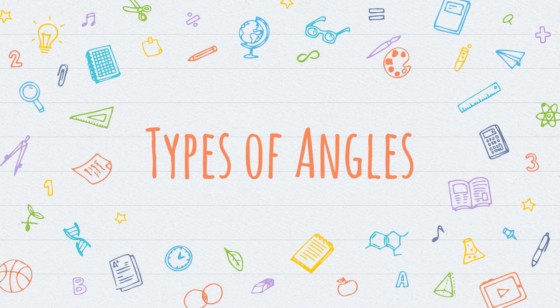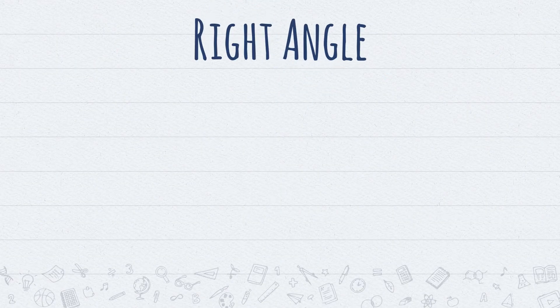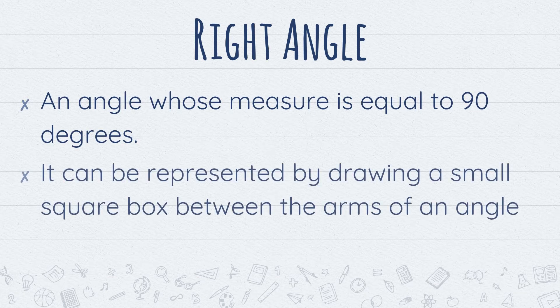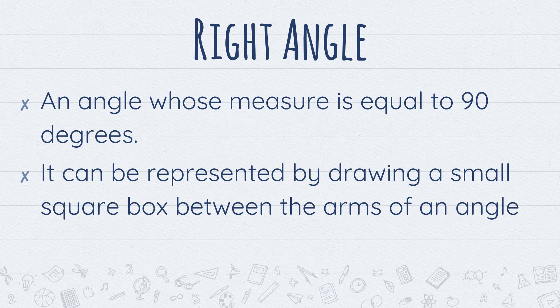Types of angles. Right angle. An angle whose measure is equal to 90 degrees. It can be represented by drawing a small square box between the arms of an angle. Parang ganito.